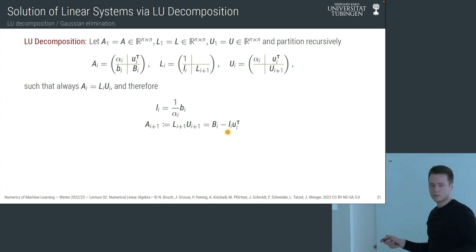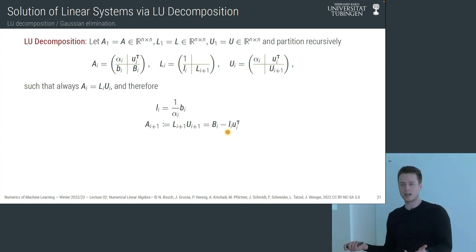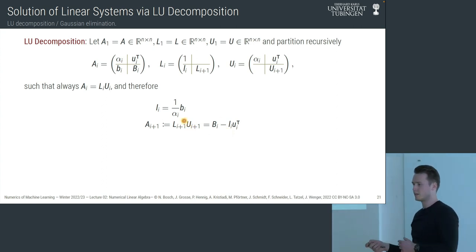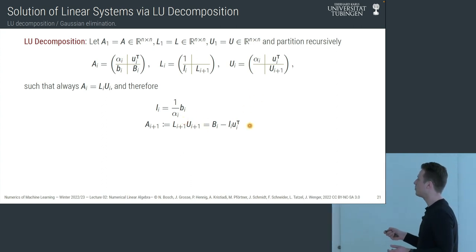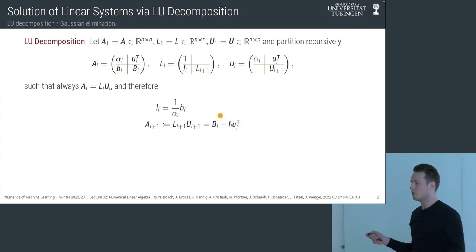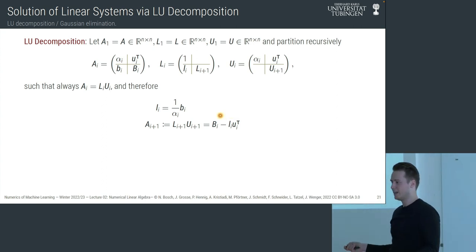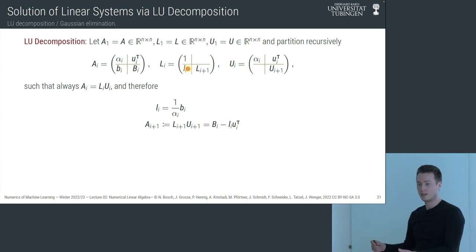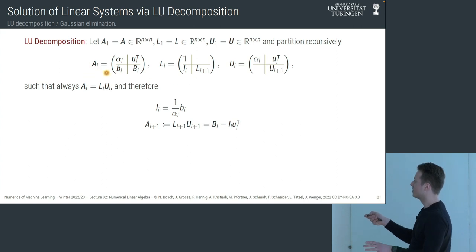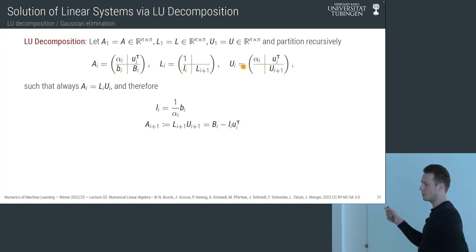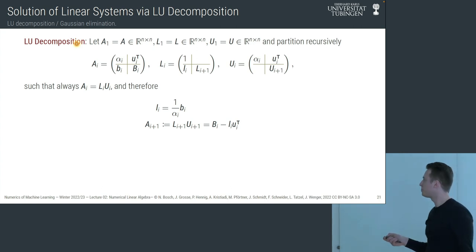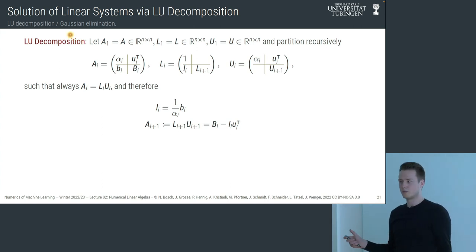One problem: we divide by αᵢ which can be zero. The solution is partial pivoting — swap rows until we find a non-zero pivot. As a stability heuristic, choose the entry with the largest absolute value among remaining rows, avoiding amplification from dividing by a small noisy value. This constructively proves the decomposition always exists for invertible matrices. The total computation cost is O(2/3 · n³).